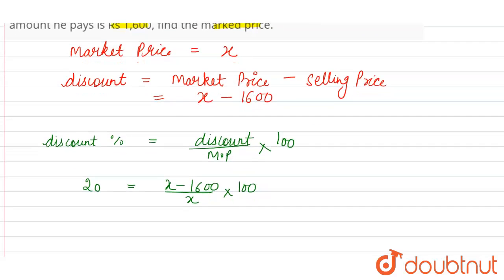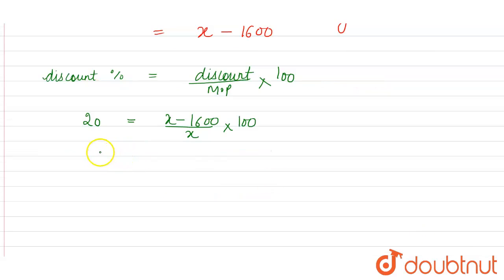Now we will solve this. 20 is equal to x minus 1600 divided by x, and 100 is in multiplication. So on the left hand side it will be in division. So 20 into 1 is 20, 20 into 5 is 100, so 1 by 5 is equal to x minus 1600.